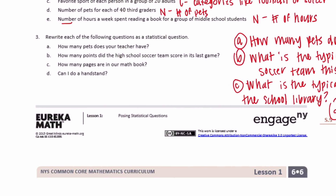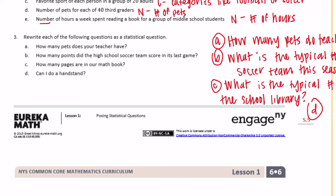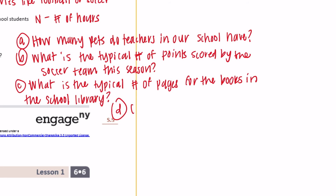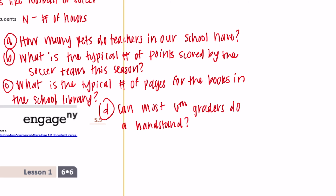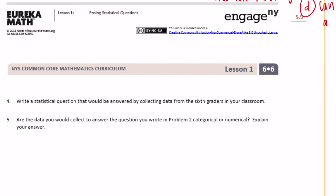Part D: 'Can I do a handstand?' That's just a yes or no answer with only one data point. We could rewrite it as: 'Can most sixth graders do a handstand?' or 'Can most of my friends do a handstand?' Those are just different ways to turn these particular questions into statistical questions.